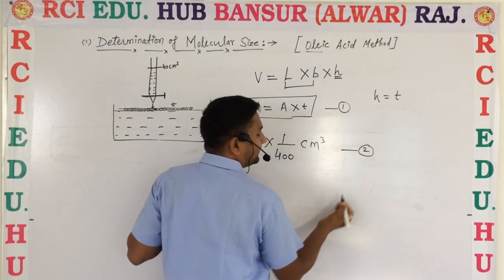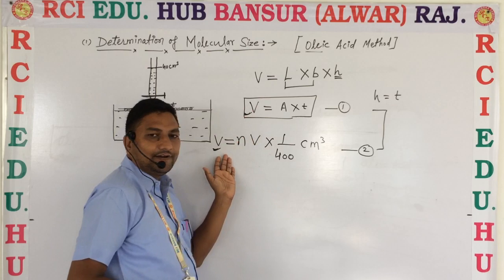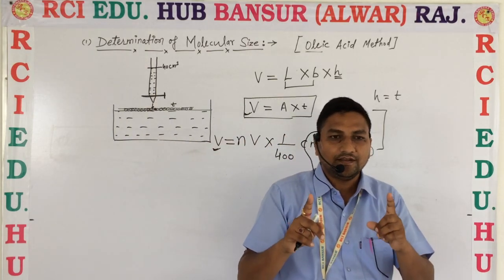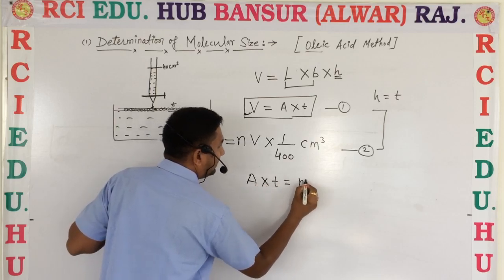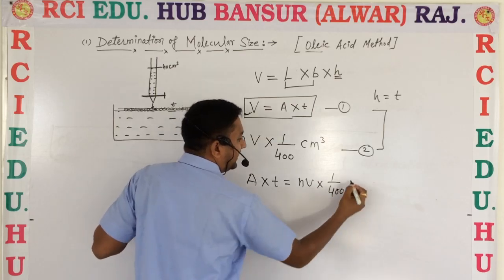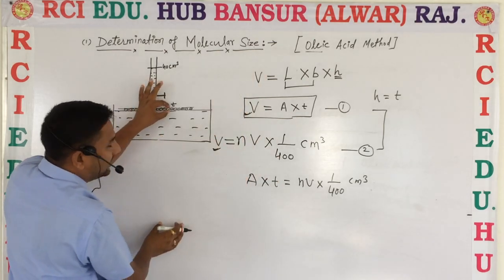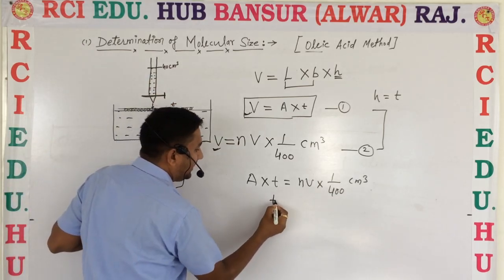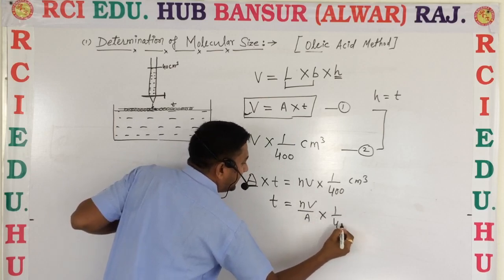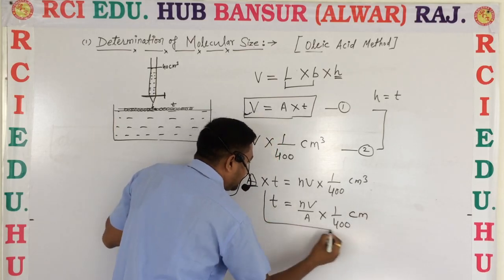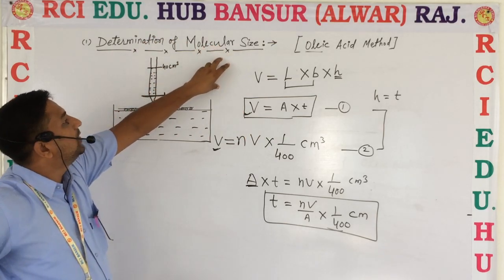This is the second equation. Solving equation one and equation two together, equating LHS and RHS: from equation one and two we can write A × t = nV × (1/400) cm³. Therefore, molecular size — small t — is equal to nV divided by (A × 1/400), giving us the thickness in cm. This is the size of the molecule, determined by this oil film method.